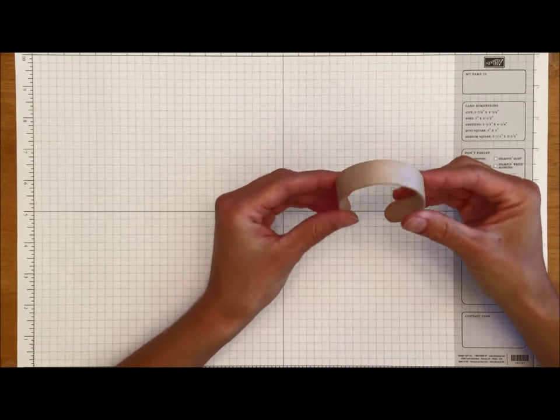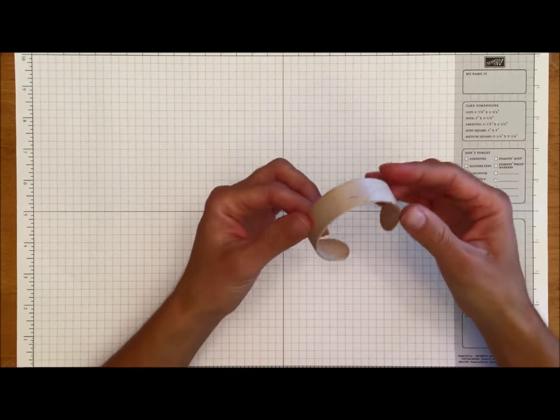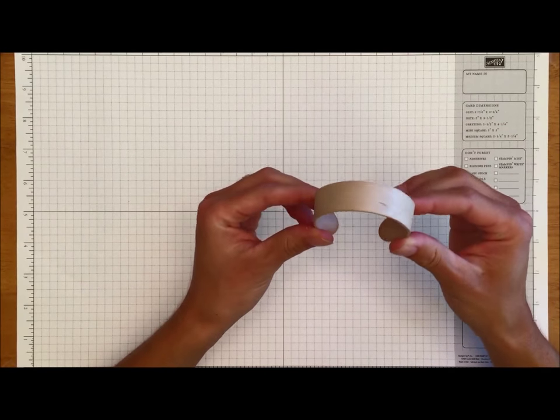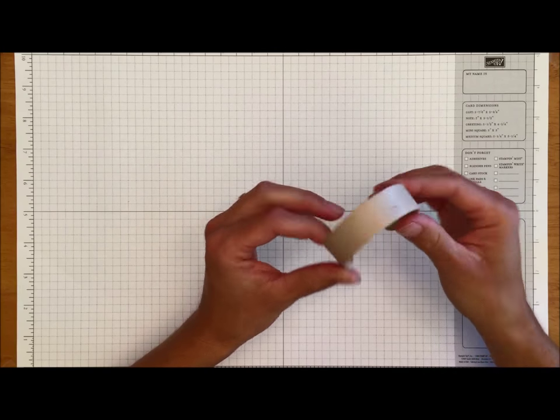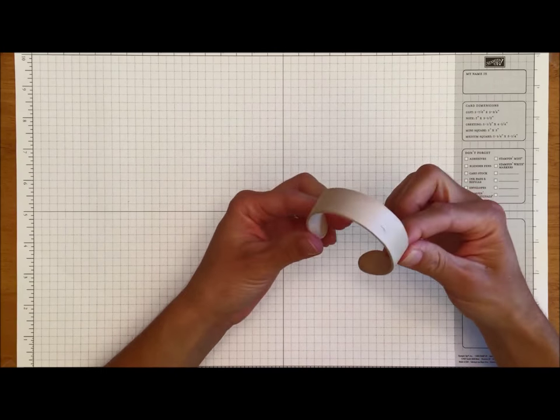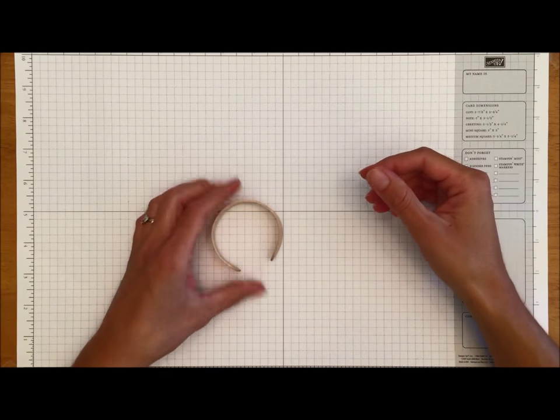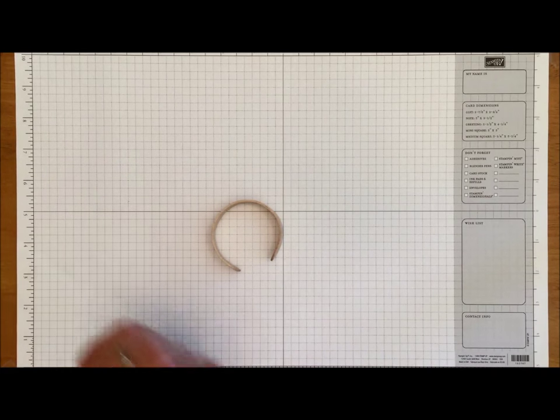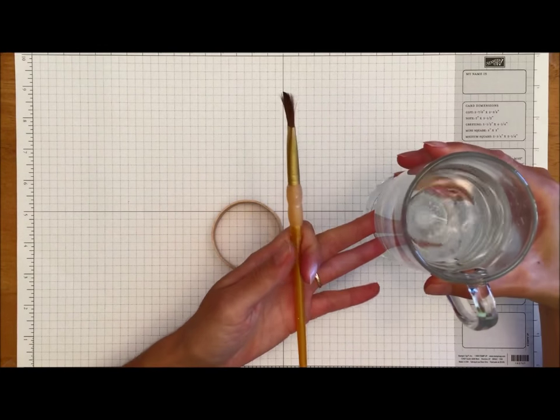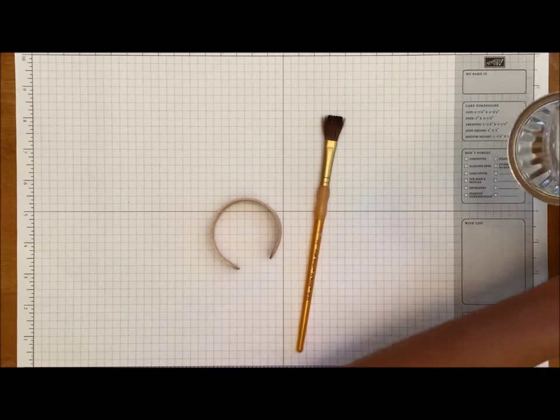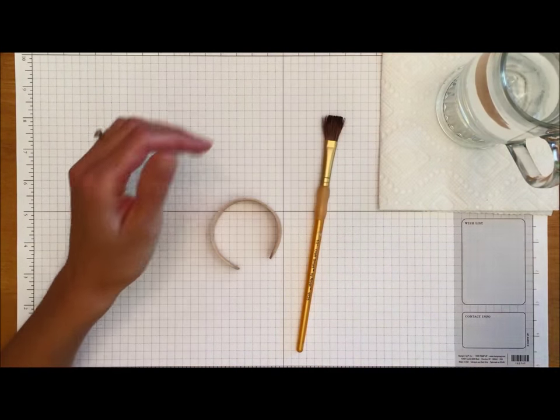So with sanding complete we can move on to the transformation of these popsicle stick bangles. There are two ways that I'm going to show you how to do this in this tutorial. First is with paint and the second will be later on with paper. With paint you'll need the basic supplies: paintbrush, water, a cup of water, paper towel, and your paint.